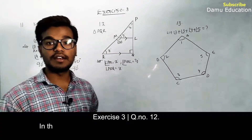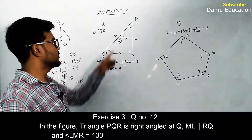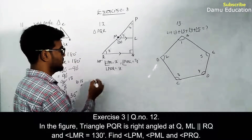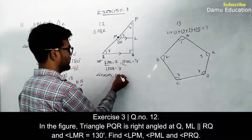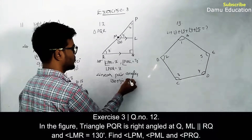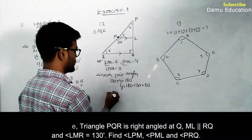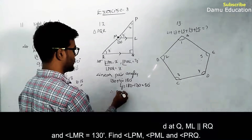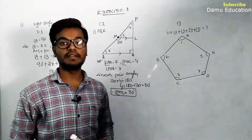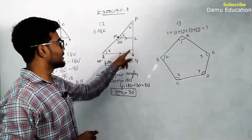The remaining angles LPM, PML, and PRQ are to be found; for convenience we label them x, y, and z degrees respectively. From linear pair angles: 130 plus y equals 180 degrees, so y equals 180 minus 130 equals 50 degrees. Therefore angle PML equals 50 degrees.